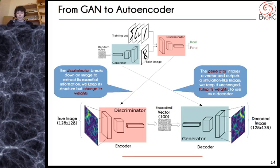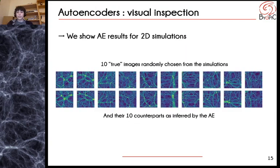So we do exactly that — we build and train such an autoencoder, and we get the following results. These results are for the 2D simulations, on a test set that the autoencoder has never seen during training. Visual inspection shows that the structures are overall well recovered, though looking closely, we can see that a lot of the finer detail is rendered somewhat randomly. This is still quite satisfactory, given that the images were reduced to vectors less than a hundredth of their original size before being decoded again.